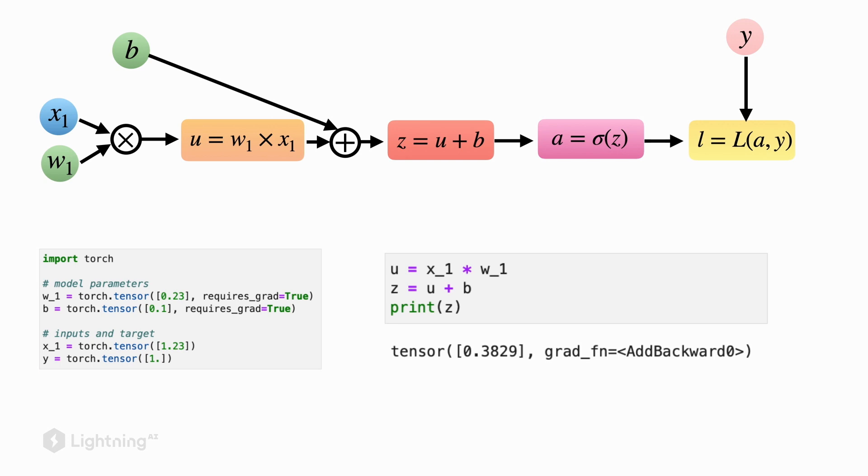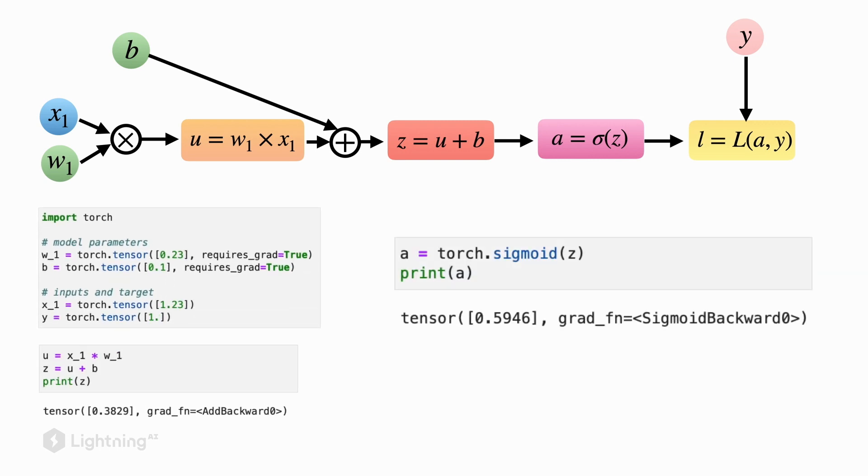Next, let's compute the weighted sum by copying over these operations from the computation graph into PyTorch. And next, let's apply the sigmoid activation function. As we can see, the output here would be 0.5946.